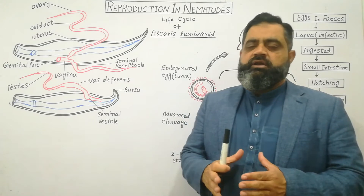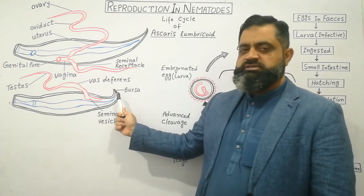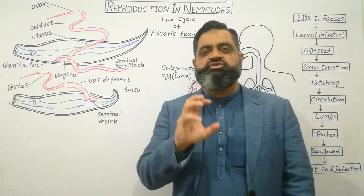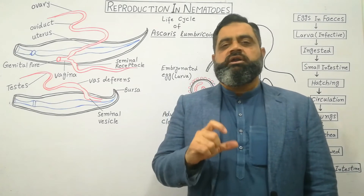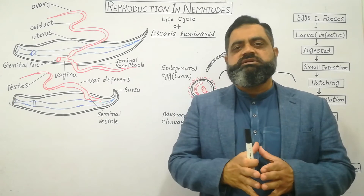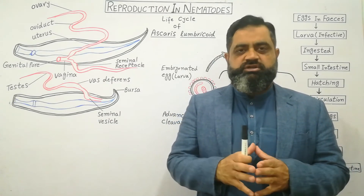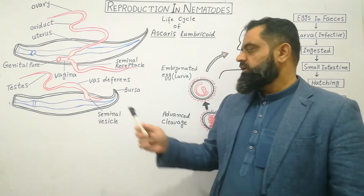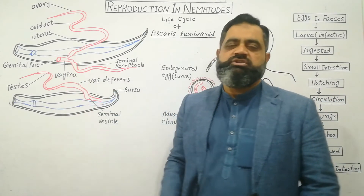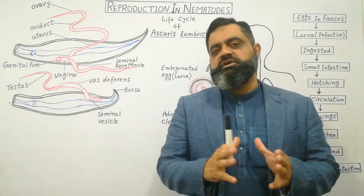On the posterior side of the male Ascaris lumbricoides there is a pointed end known as the bursa. The bursa is a specialized organ which helps to transfer the sperms of the male into the body of the female. When the breeding season starts, male and female Ascaris come together, they do copulation, and the male transfers its sperms into the genital pore and into the vagina of the female Ascaris lumbricoides, completing the process of reproduction.